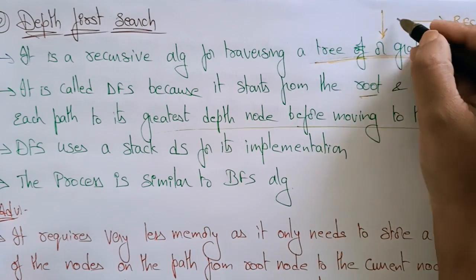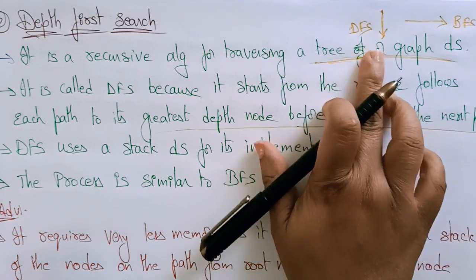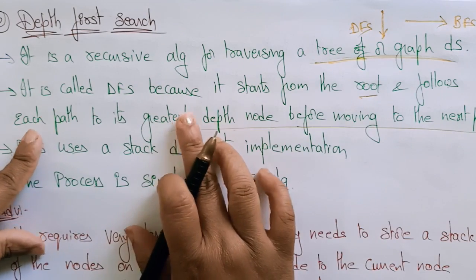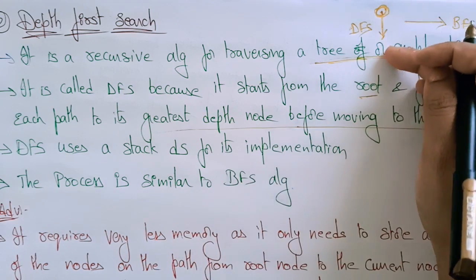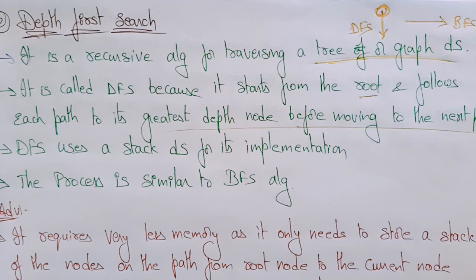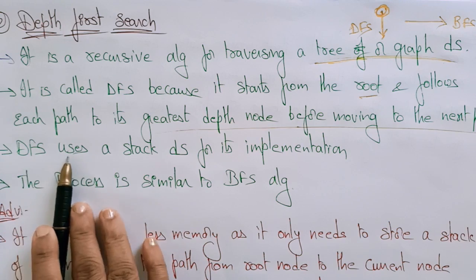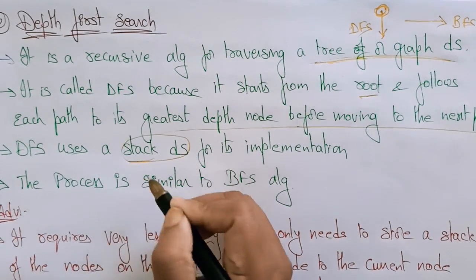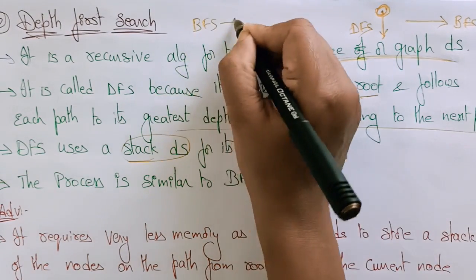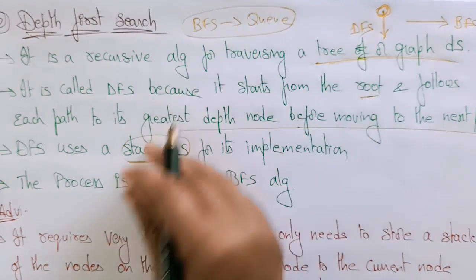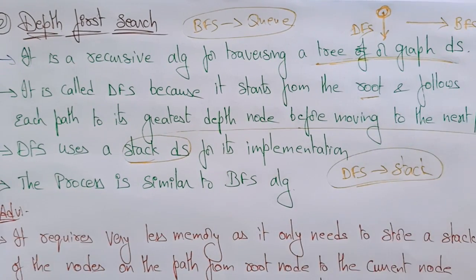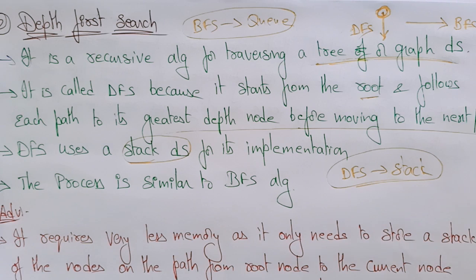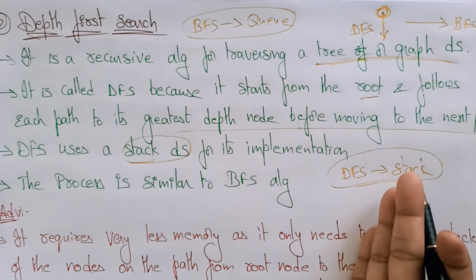Depth first search starts from the root node and follows each path to its greatest depth node before moving to the next path. Depth first search uses a stack data structure, whereas BFS uses a queue data structure. The process is similar to the breadth first search algorithm — the only difference is that DFS uses a stack and BFS uses a queue.